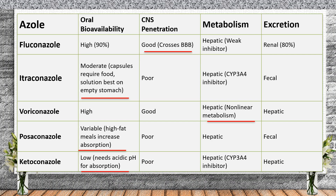Looking at the pharmacokinetic properties of azoles: fluconazole has excellent oral absorption and is renally excreted, making it the only azole requiring dose adjustments in renal failure. Itraconazole and voriconazole are metabolized by the liver and have significant drug interactions. Ketoconazole requires an acidic environment for absorption, so it should not be taken with proton pump inhibitors.